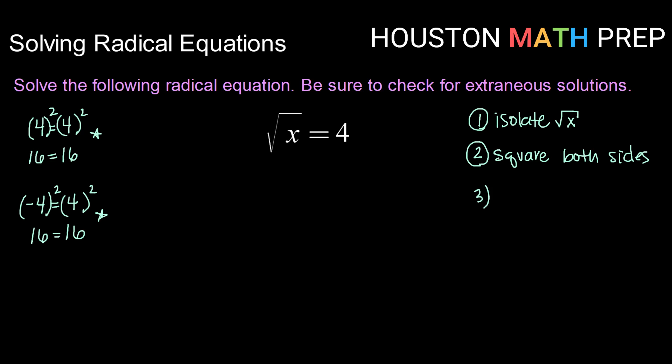So what that is going to mean is after step 3 which is going to be to solve for x, step 4 which is going to be super important is going to be check your answers. So because we're squaring both sides we can get possible wrong answers so we need to check our answers.